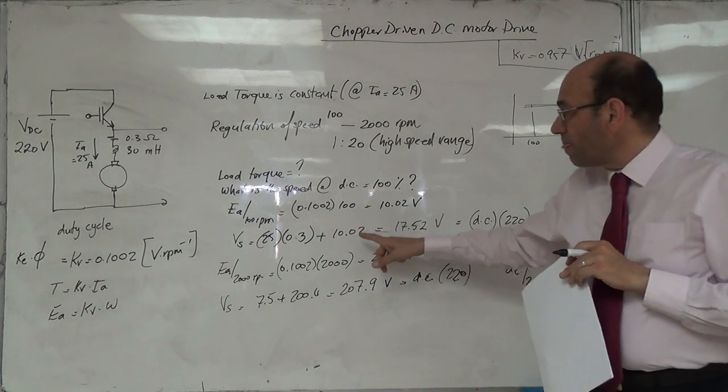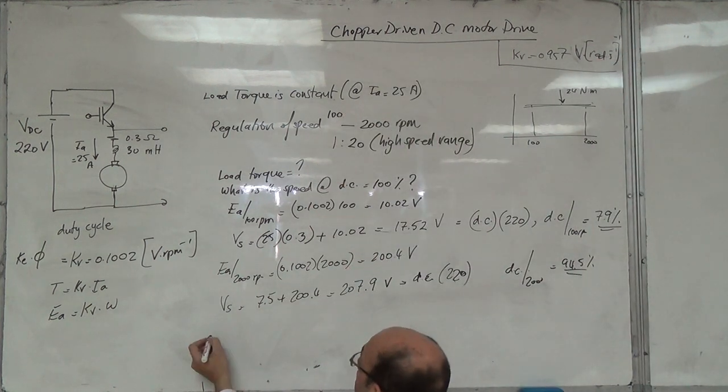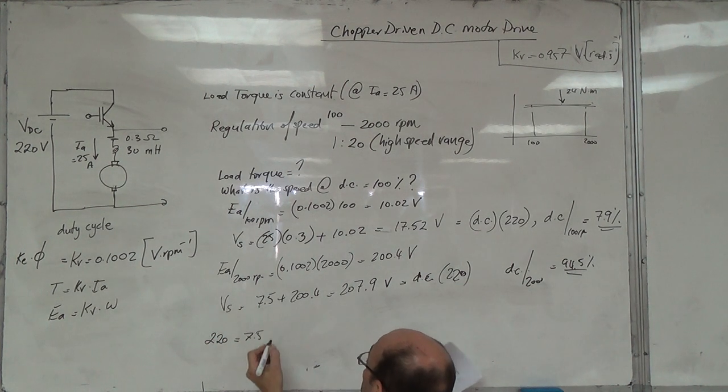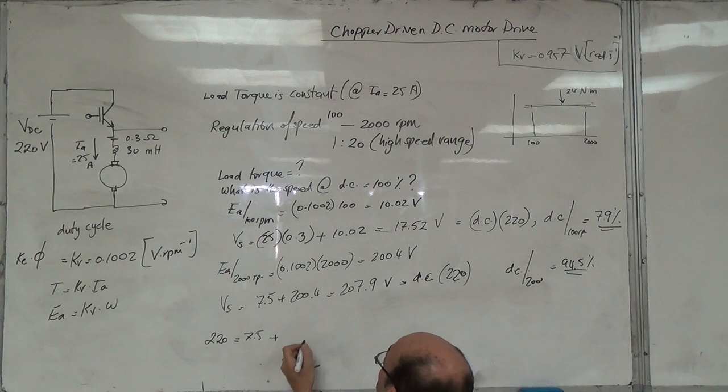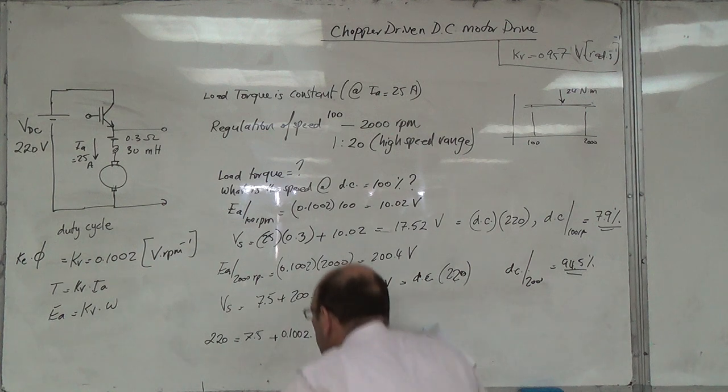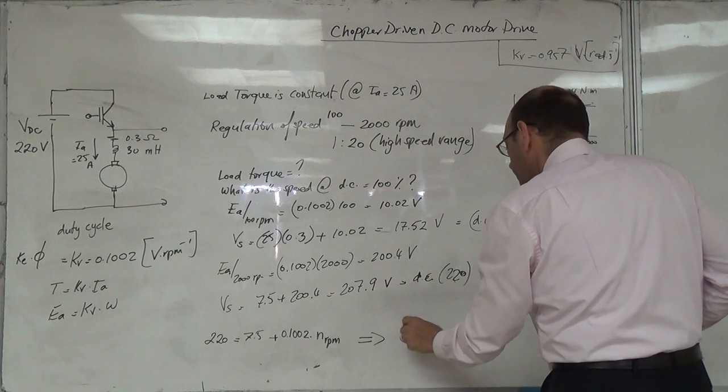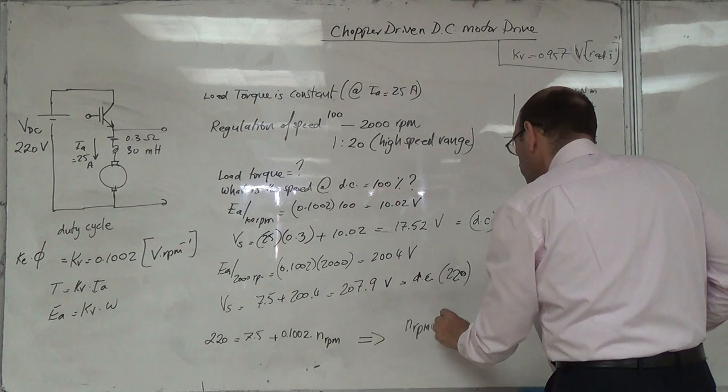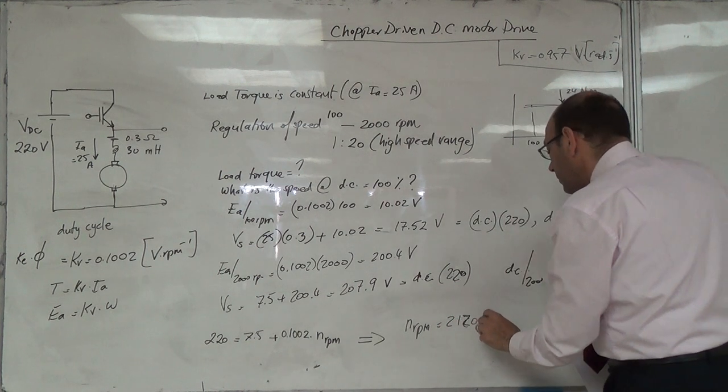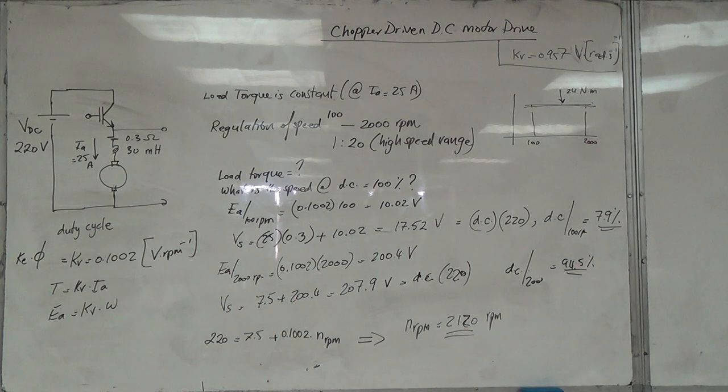The last question: what if it was 100 percent? Then V_S becomes 220. So 220 equals 7.5. If I raise the duty cycle to 100 percent.